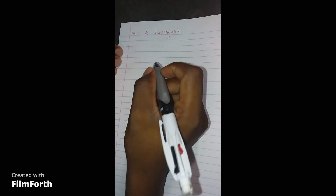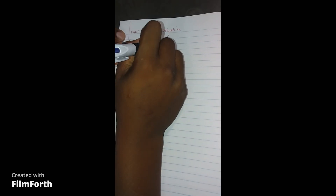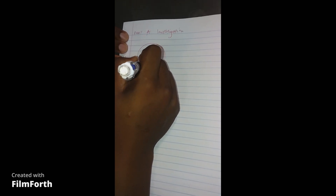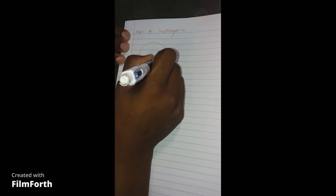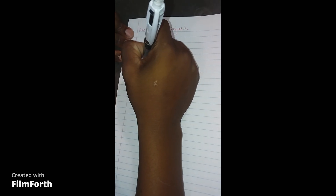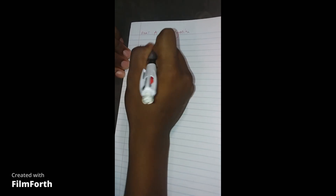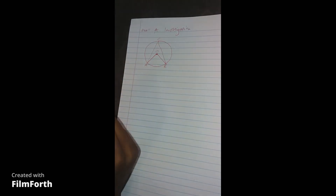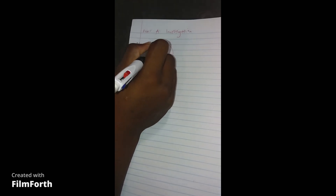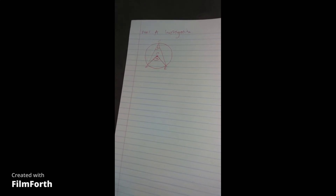Let me draw this diagram. We have a circle with a center, and a radius line. From here to here, we have point B, point C, and point O. We have angle A here and angle B here, and we are required to determine the size of angle A and the size of angle B.